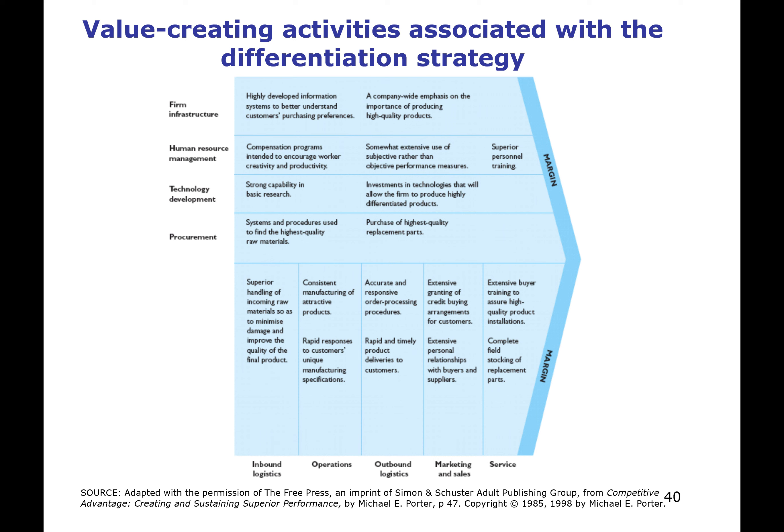We can look at the value chain and different things we can do within it to make our product differentiated. Value chain differentiation tends to focus on the product and not necessarily the process when making changes. For example, having strong basic research in technological development so that you can invest in technology that makes your products different is a focus of differentiation strategy — as distinct from cost strategy, where you invest in process R&D to reduce the cost of producing your product.